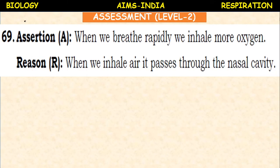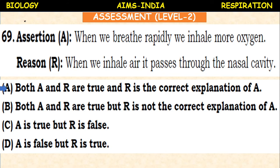Next question. Assertion — when we breathe rapidly, we inhale more oxygen. Reason — when we inhale air, it passes through the nasal cavity. The passage of air: from outside, air enters the nostrils, passes through the nasal cavity, then the pharynx, larynx, trachea, bronchi, bronchioles, and finally the alveolus. Both assertion and reasoning are true and the reason is the correct explanation.